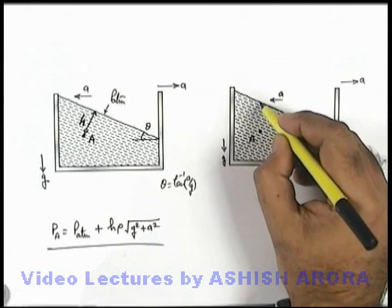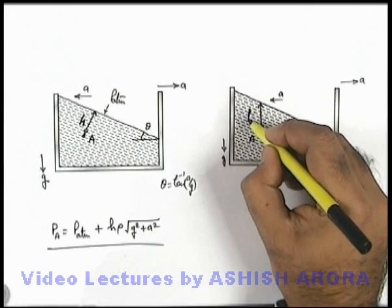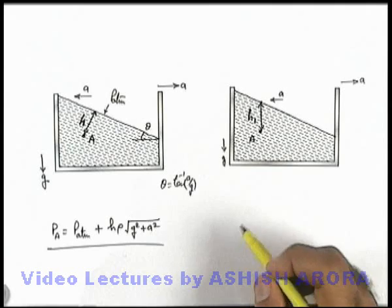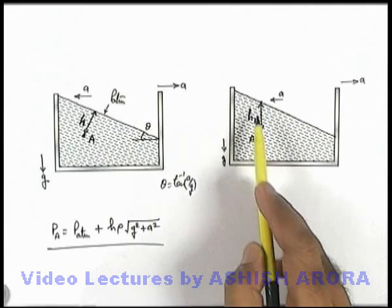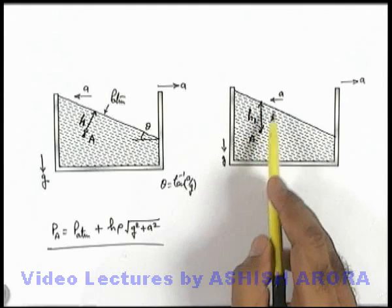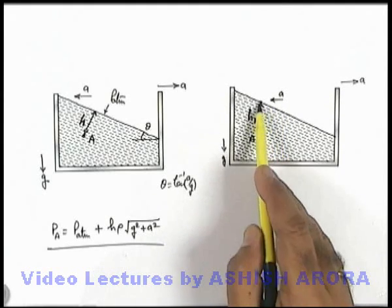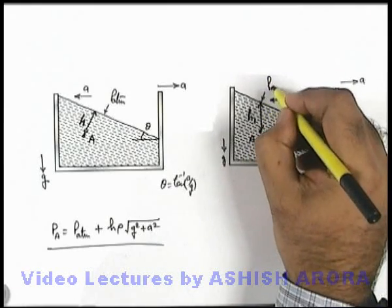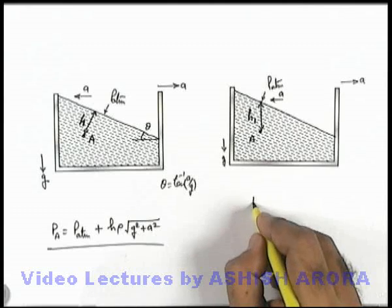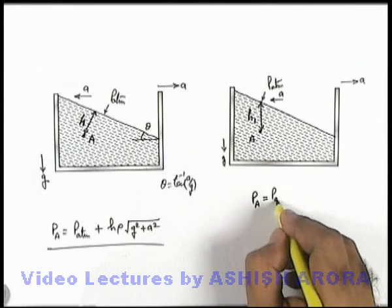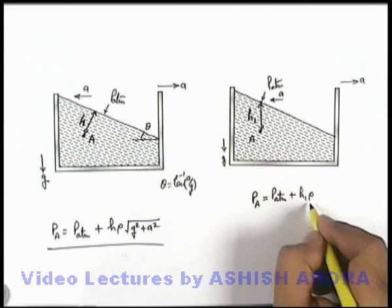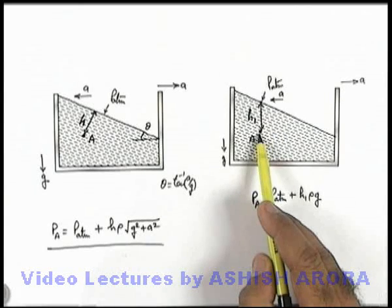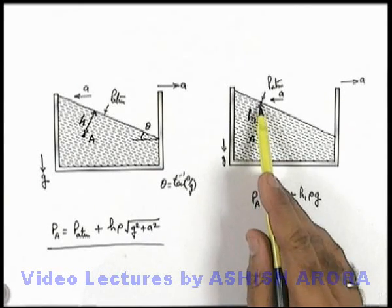Say point A is at a vertical depth h1 below the free surface of the liquid. Along this vertical direction, there won't be any pressure variation due to the horizontal acceleration ay, as it is normal to that acceleration. At the free surface the pressure is P_atmospheric, so the pressure at point A can also be given as P_atmospheric + h1·ρ·g. Here we don't take g_effective as in the previous expression, because in the vertical direction pressure varies only due to gravity.